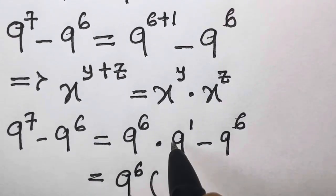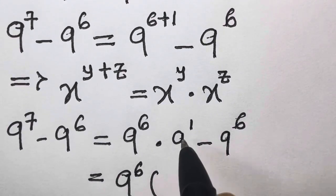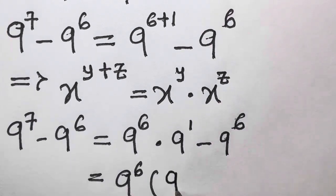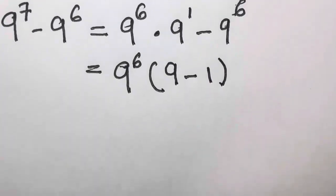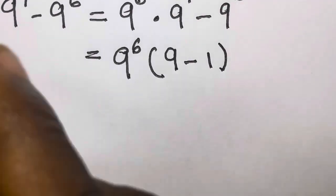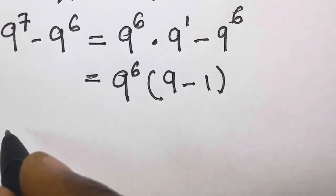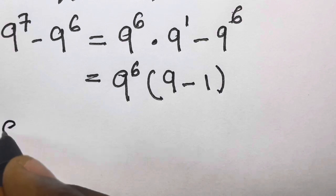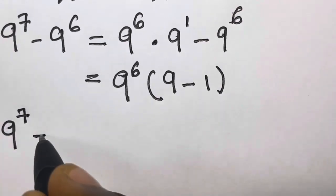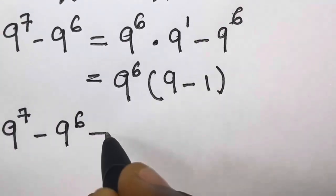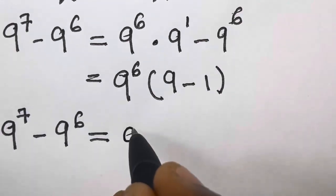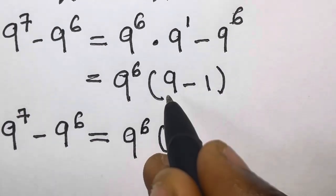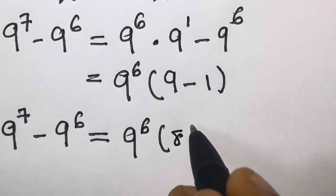What will be left here: that is 9 raised to the power 1, which is 9, minus 1. So we have 9 raised to the power 7 minus 9 raised to the power 6 equals 9 raised to the power 6, and 9 minus 1 will give us 8.